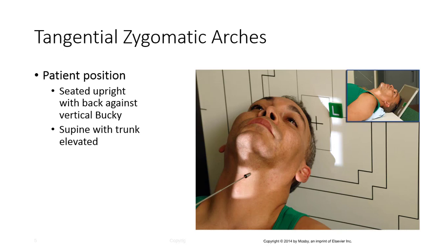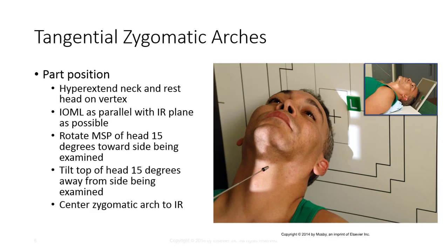For the tangential zygomatic arches projection, the patient can be seated upright with their back against the vertical bucky, or supine with their trunk elevated. Hyper-extend the neck and rest the patient's head on the IR, keeping the IOML as parallel with the IR plane as possible. Starting with the initial positioning of the SMV view, rotate the MSP of the head 15 degrees towards the side being examined. This places the zygomatic arch parallel with the lateral border of the IR.